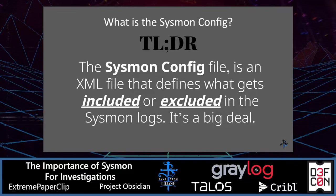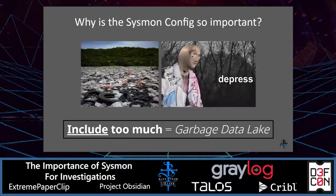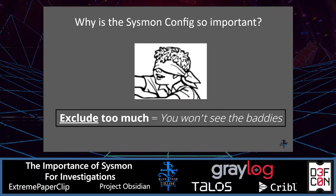The Sysmon config is an XML file that defines what gets included or excluded in the Sysmon logs — it's a big deal. If your Sysmon config is over-inclusive, you could end up with a lot of garbage data that's hard to analyze. On the other hand, if you exclude too much, you'll be missing valuable log data that could contain evidence of malicious activity.